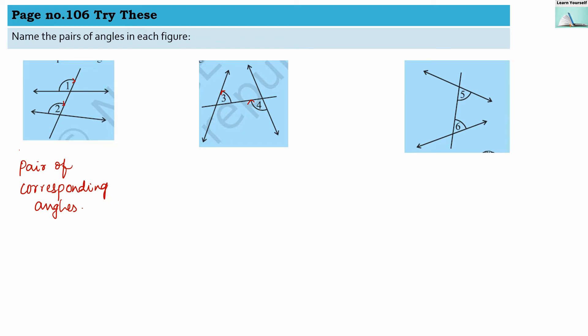Now the third example: angle 5 and angle 6. These two angles are on the same side of the transversal and they are interior, so they are a pair of interior angles on the same side of the transversal.